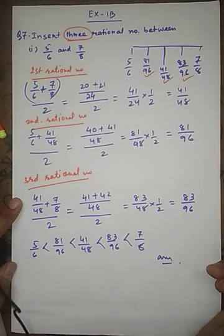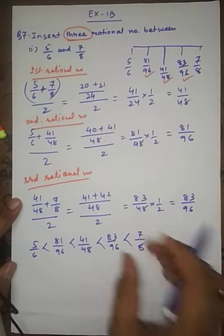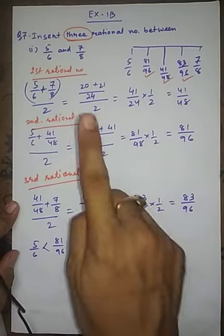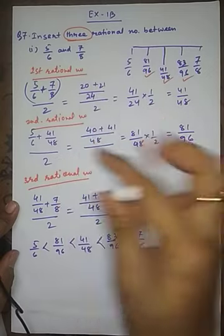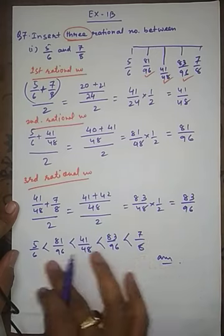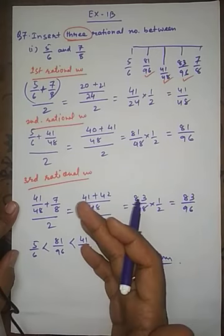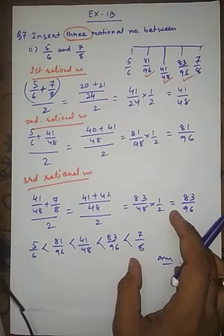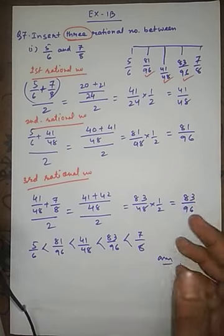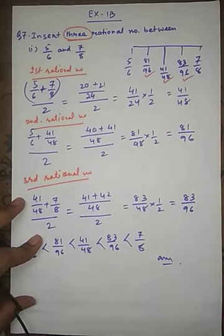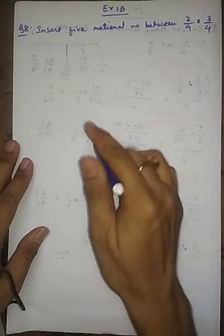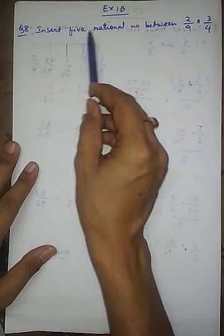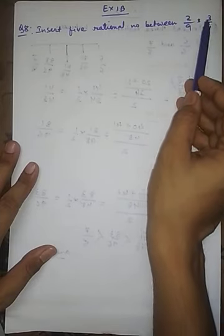Now let us see question number 8: Exercise 1B, question number 8 — Insert 5 rational numbers between 2 by 9 and 3 by 4.